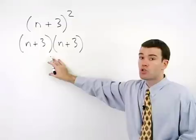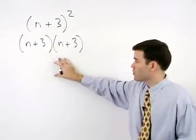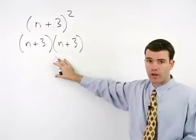So, we really have two binomials that are multiplying together, and to simplify this problem, we must use the FOIL method.